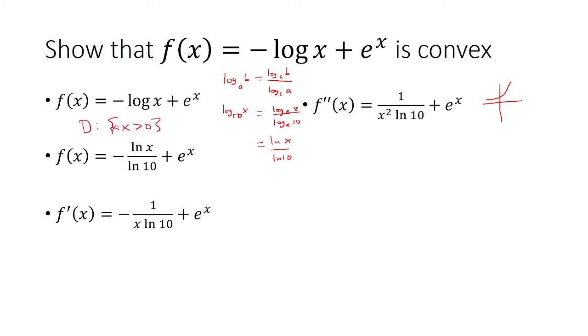So all x such that x is greater than 0. So for that domain, the second derivative is always going to be positive. So we say that f is convex.